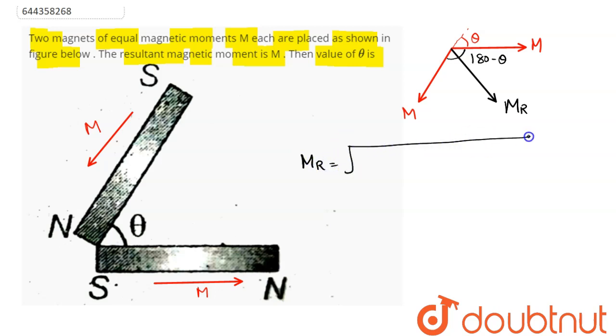Root under M square plus M square plus 2M into M into cos of angle between these two vectors, which is 180 minus theta. So this comes as 2M square, and cos 180 minus theta is minus cos theta, hence minus 2M square into cos theta.